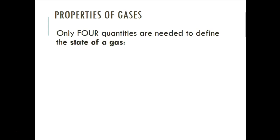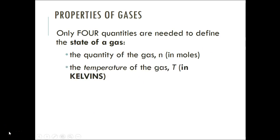So what are some properties of gases that we need to know about? Only four quantities are needed to define the state of a gas. So in other words, if we want to know that something's a gas, we have to know something about these four quantities. What are they? The quantity of the gas, n, is the letter that we use. And that is in number of moles. Next is the temperature of gas, T, in Kelvin. Notice it's not in Celsius.